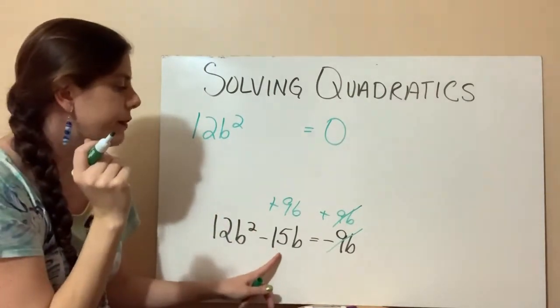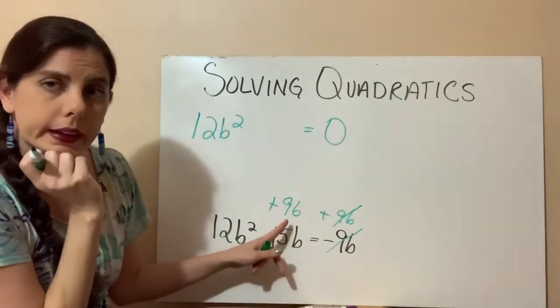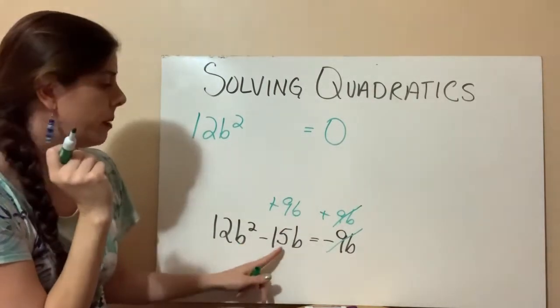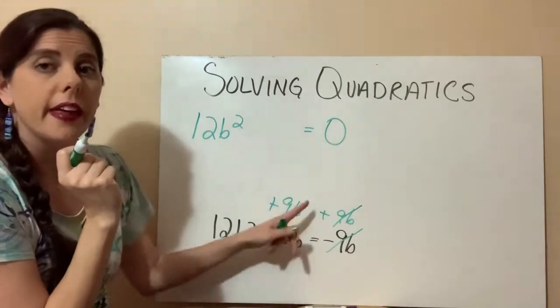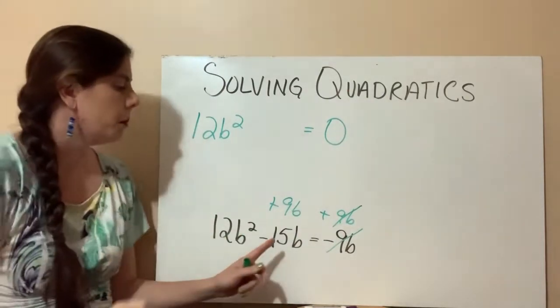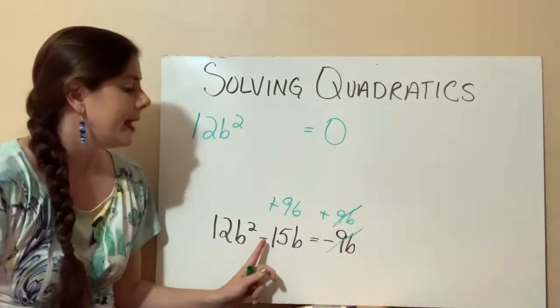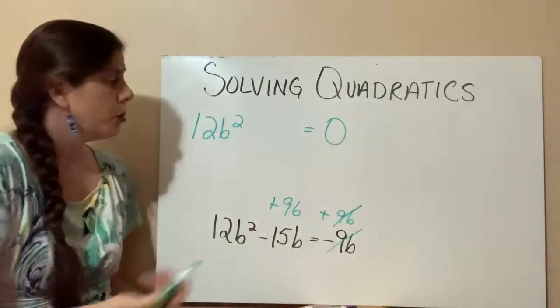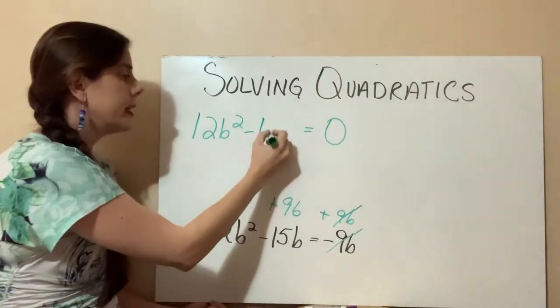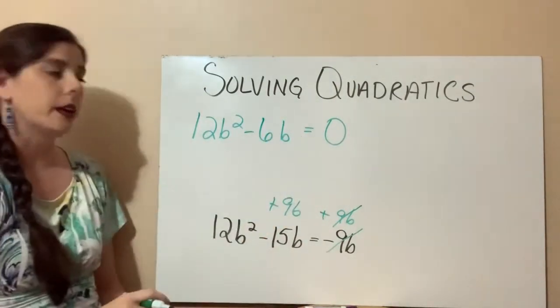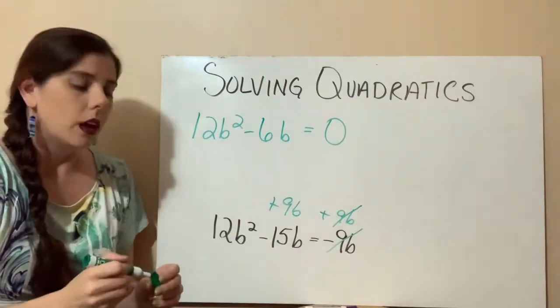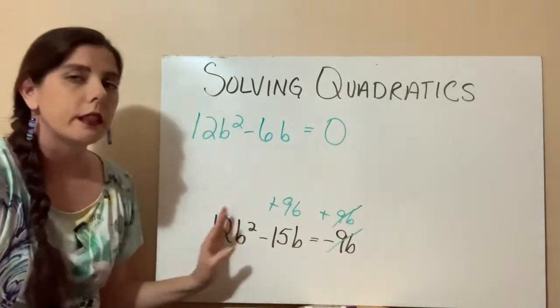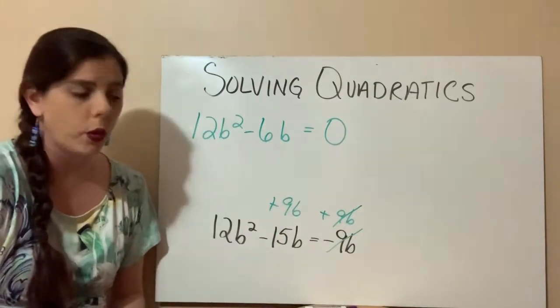12b squared. And what's a negative 15 plus 9? So because these are like terms, we're combining like terms here. They both have the same variable, and the variable has the same exponent, so we can combine them. So we have a negative 15 plus a 9, or 9 minus 15, whichever you prefer. And that's going to give us a negative 6b. And that all equals 0. Are we done yet? Have we solved it? No. Again, we've just taken the first step to factoring that equation.